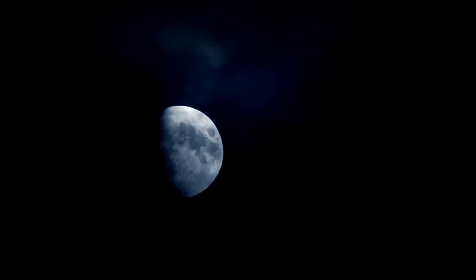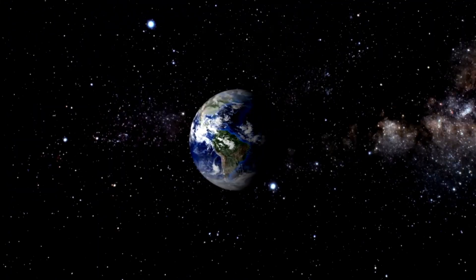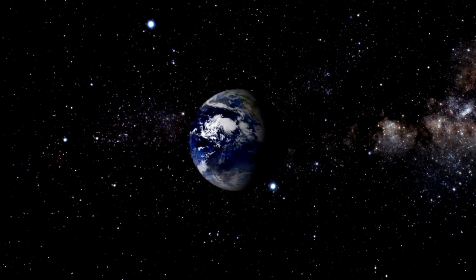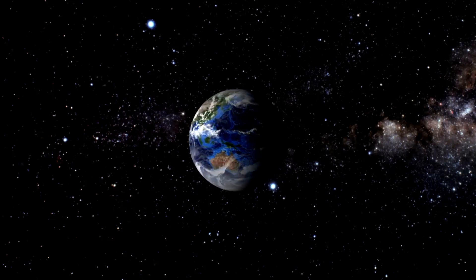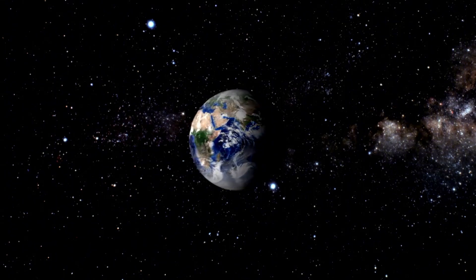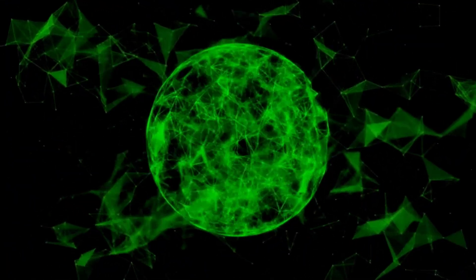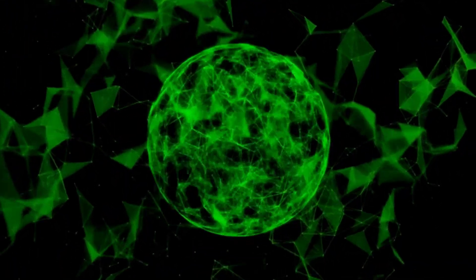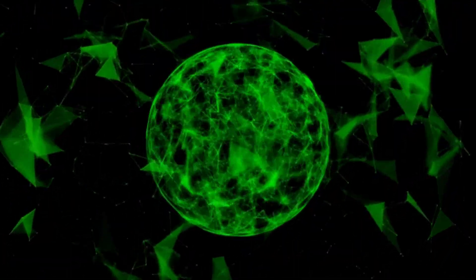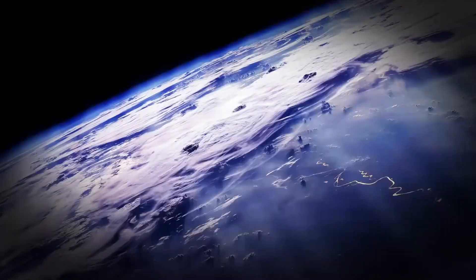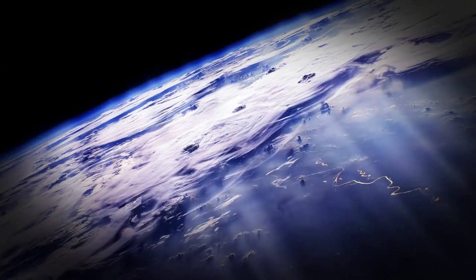For instance, the magnetometers have provided insights into the magnetic fields of Jupiter, Saturn, Uranus, and Neptune, revealing the complex interactions between these planets and their environments. The plasma wave detectors have helped us grasp the nature of the solar wind and its relationship with planetary atmospheres and magnetospheres.